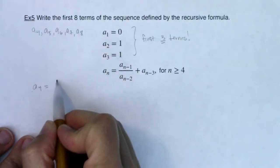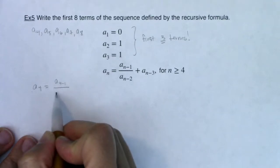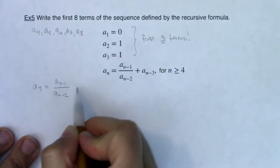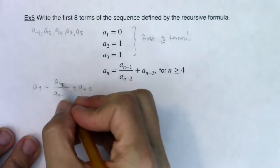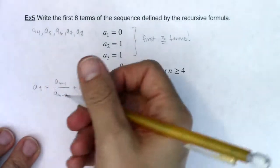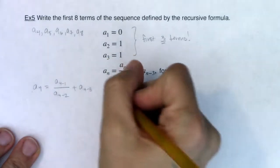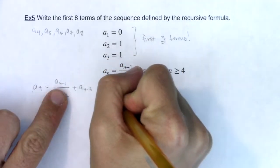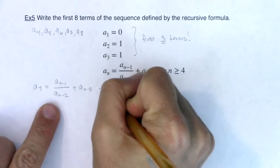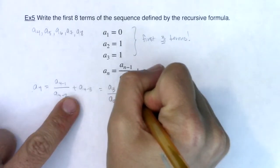This says it should be the ratio of a sub n minus one to a sub n minus two plus a sub n minus three. Now let's see what each of those subscripts turn into, because that's what happens with recursive formulas. It's the subscripts that are changing out. So as I start to simplify this, this looks like it's going to be a sub three, because four minus one is three, in ratio to a sub two plus a sub one.